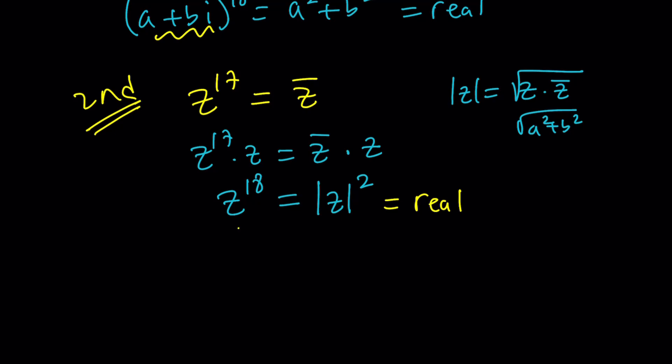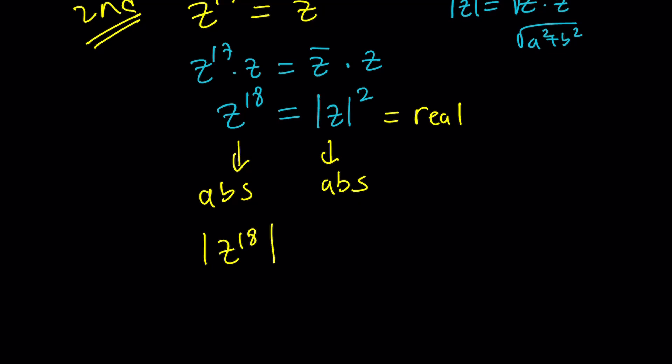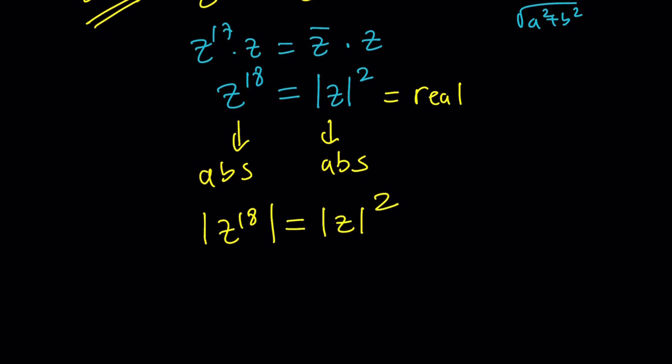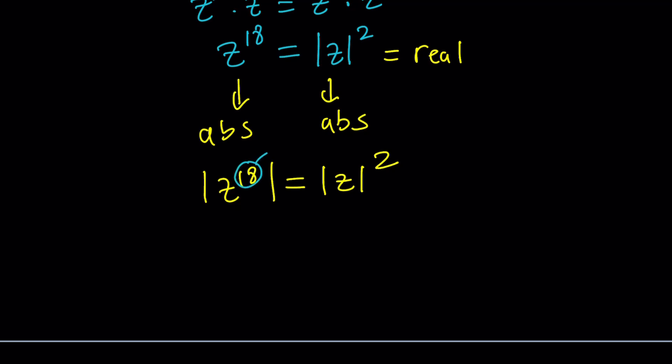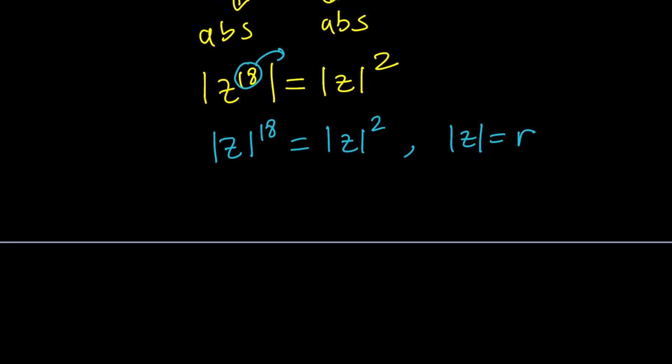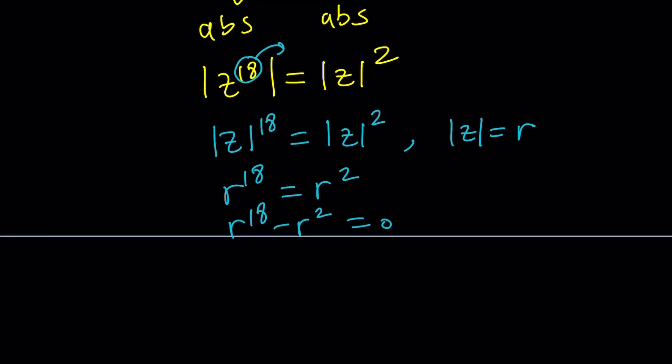By taking the absolute value on both sides. This is already an absolute value. Taking the absolute value of the absolute value is not going to really change anything. So we're going to end up with the absolute value of Z to the 18 is the absolute value of Z squared. Make it nicer by pulling this out because we have that nice power property. And at this point, we can replace the absolute value of Z with R, which is also called the modulus. And we get R to the 18th equals R squared. Let's put everything on the same side.